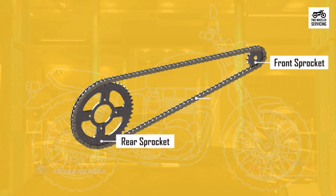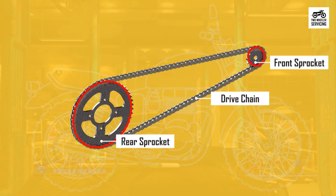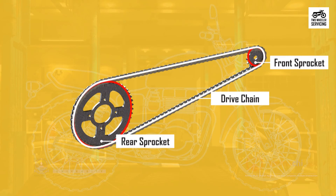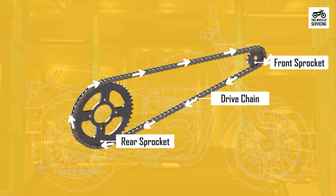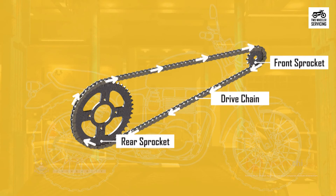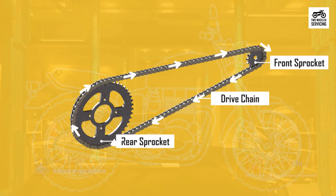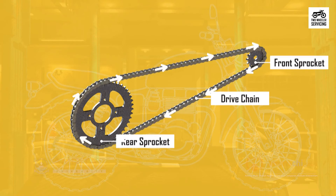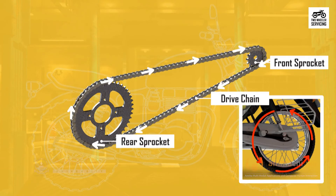The chain drive system consists of three components: two sprockets and the drive chain. A sprocket mounted to the output shaft is connected to a sprocket attached to the rear wheel of the motorcycle by a metal chain. When the output shaft of the gearbox turns the first sprocket, the power is sent through the chain to the rear sprocket and wheel, moving the vehicle forward.